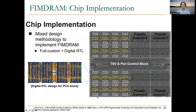Here we can take a look at the chip implementation. Besides the peripheral control block and TSVs at the center of the die, we can identify the four pseudo-channels — one, two, three, and four — and in each pseudo-channel we see the different bank groups. Inside the bank groups, and in between two DRAM banks, there are these PCU blocks: one PCU block for every two cell arrays, such as bank eight and bank nine.